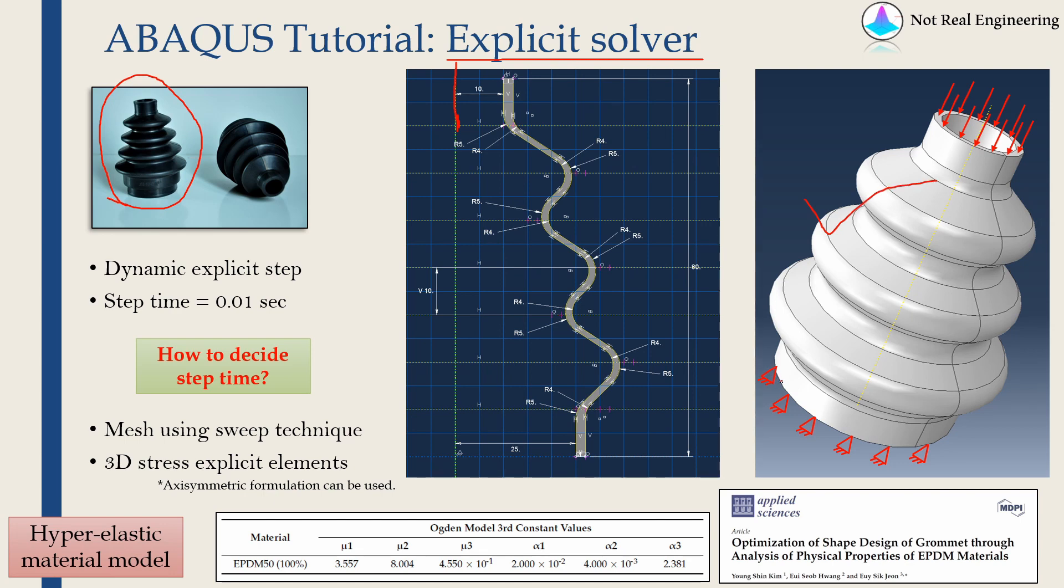Then we will fix the bottom face and we will apply a displacement boundary condition on the top face and we will compress it in this direction. To tell Abaqus to use explicit solver, we have to use dynamic explicit step in step module.